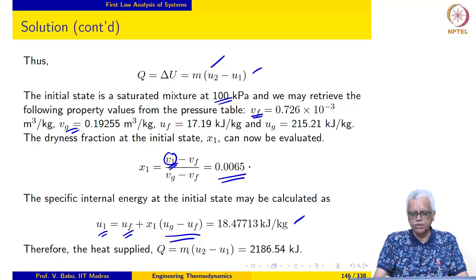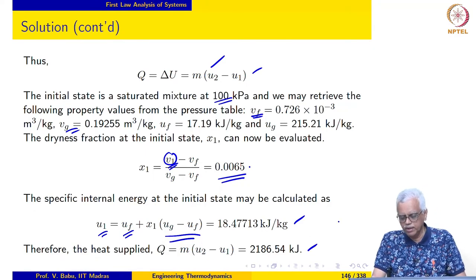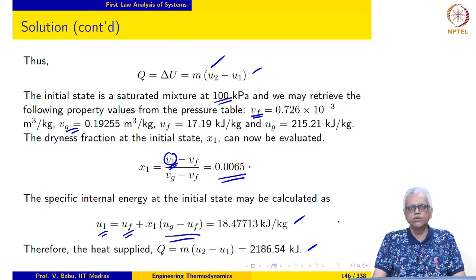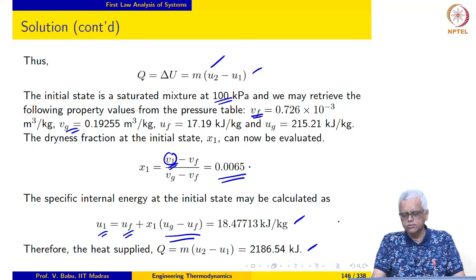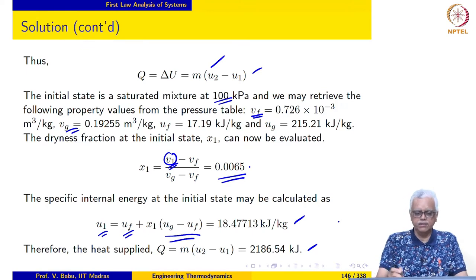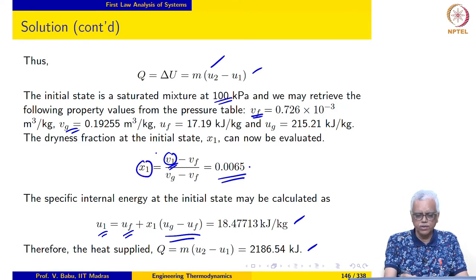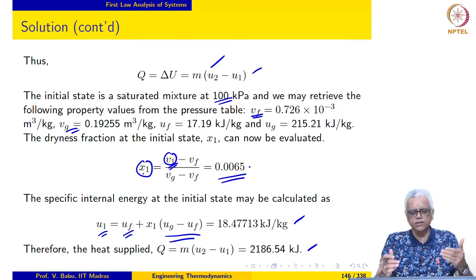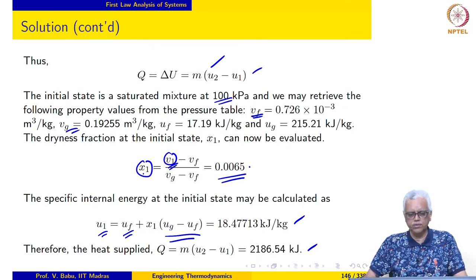Q is equal to M times U2 minus U1. The heat supplied comes out to be 2186.54 kilojoules. The important concept here is that once we know the specific volume at the initial state, we can calculate the dryness fraction and the property values of the mixture.